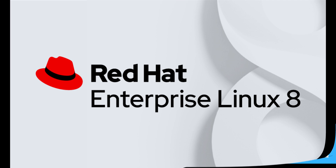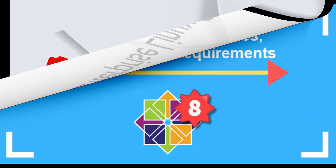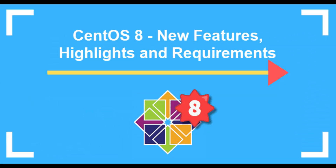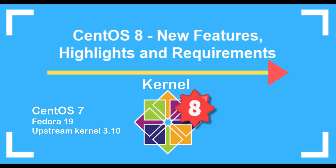Let's move on to some major new features of CentOS 8. We are going to compare the features of CentOS 7 and CentOS 8. Let's start with the kernel. On CentOS 7, the kernel was based on Fedora 19 with upstream kernel 3.10. On CentOS 8, the kernel is based on Fedora 28 with upstream kernel 4.18.